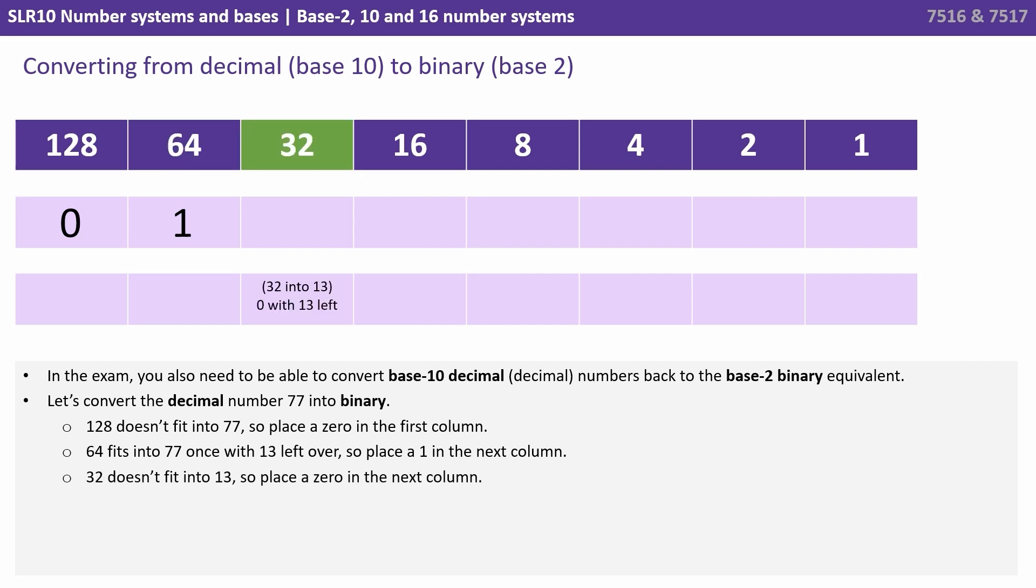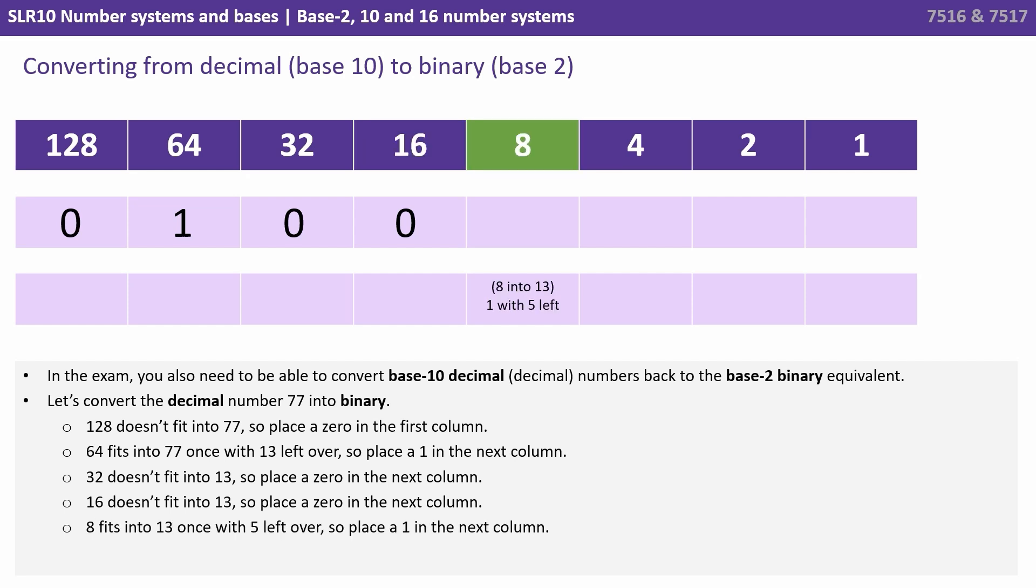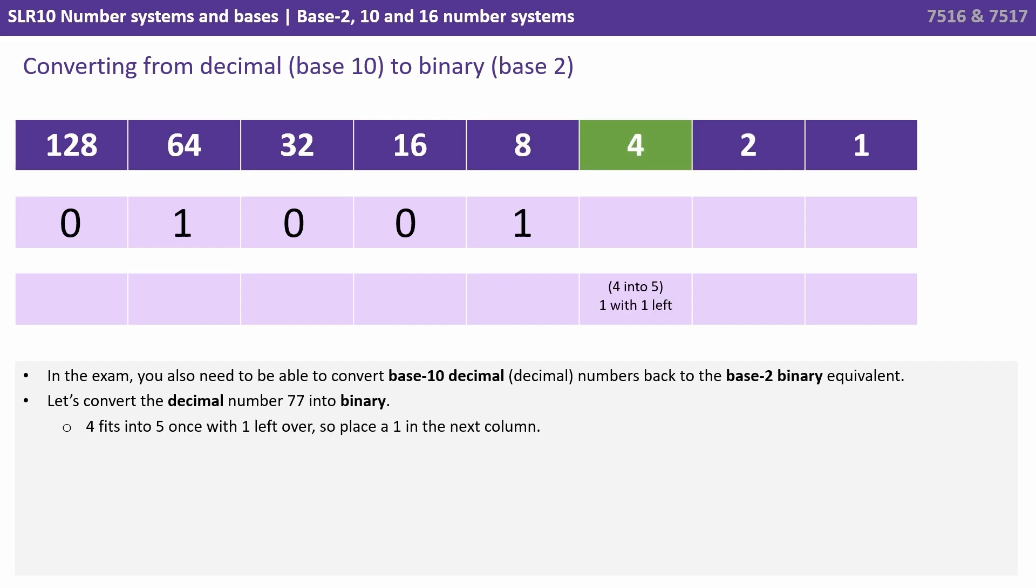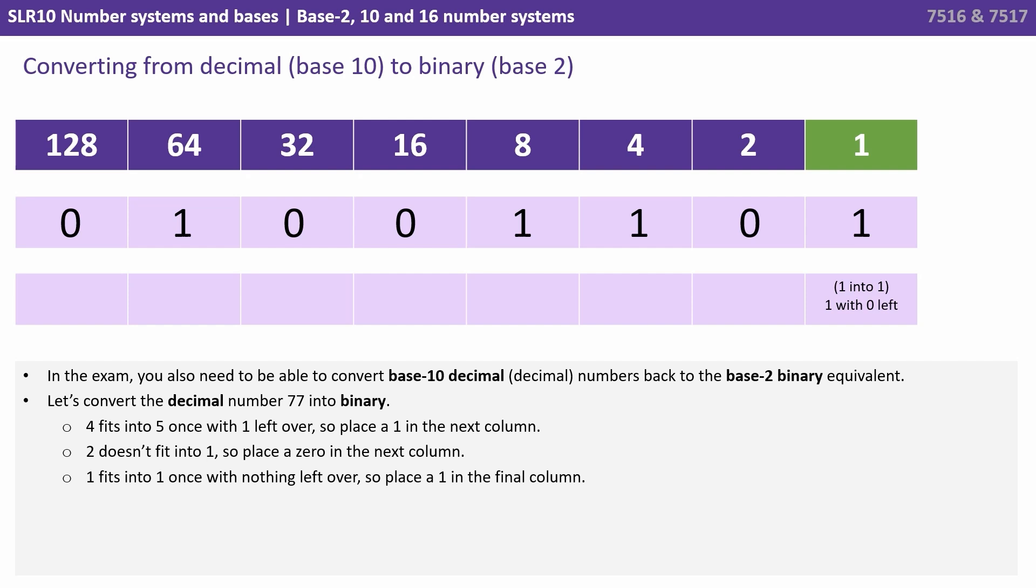We carry on in this way. So how many 32s fit into 13? 0 with 13 left over. 16 into 13, 0 with 13 left over. 8 into 13 where we get 1 of those with 5 left over. 4 into 5 we get 1 of those with 1 left over. 2 into 1 that's 0 with 1 left over. 1 into 1 is 1 with 0 left over. This is the number 77 in base 2 binary and we can prove it by adding up the columns that have a 1 in. That's a 64 plus an 8 plus a 4 plus a 1 is 77.